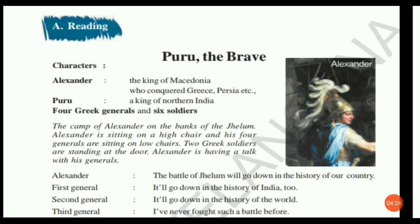Now coming to the text: the camp of Alexander on the banks of the Jilam. After the completion of the war, they arranged a camp and there is a discussion in that camp. Alexander is sitting on a high chair and his four generals are sitting on low chairs. Two Greek soldiers are standing at the door. Usually a king sits on a high chair and generals sit on low chairs. Alexander is having a talk with his generals — a general means a commander of an army.